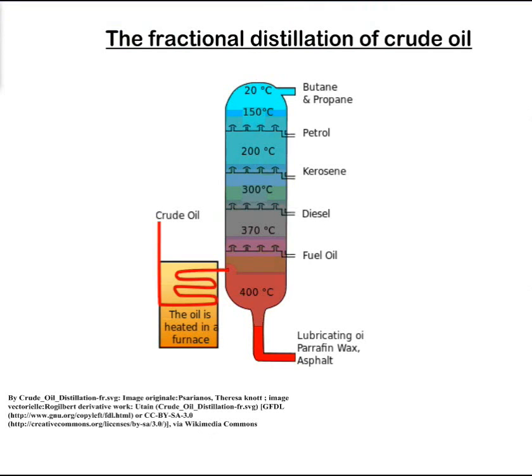Today we'll be looking at the fractional distillation of crude oil. Crude oil is a mixture of different hydrocarbons. It's a thick black liquid which is found underground and was formed millions of years ago when organic matter like plants and animals under high pressure became oil. So crude oil is a mixture of hydrocarbons of different chain lengths.